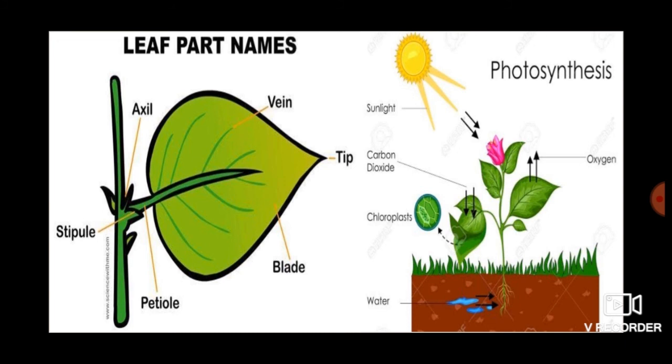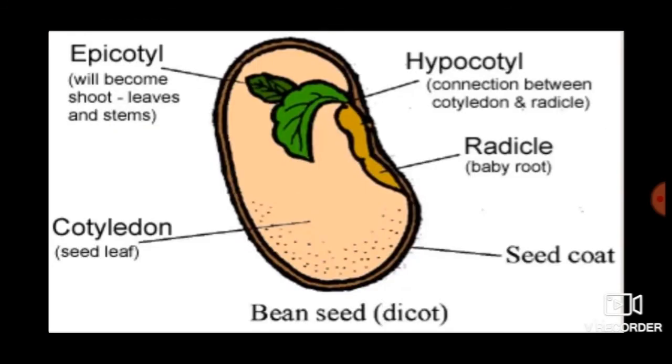Leaves of some plants store food. Cabbage, spinach, and mint are some leafy vegetables we eat. Seeds are generally tiny such as grain, or big like that of a kidney bean.